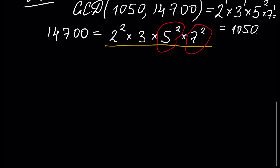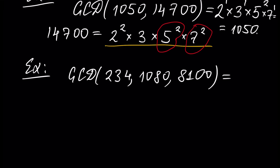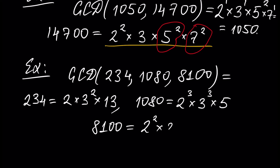Another, more complex example: find the GCD of numbers 234, 1080, and 8100. Using prime number factorization: 234 is two times three squared times thirteen; 1080 is two to the power of three times three to the power of three times five; and 8100 is two squared times three to the power of four times five squared.